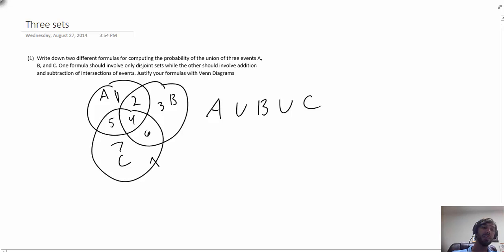Each of these seven regions involves the intersection of three different events. For example, region seven here would be all the items which are in C but are not in A and not in B. Recall in class we were using this tilde notation to represent the complement of an event.